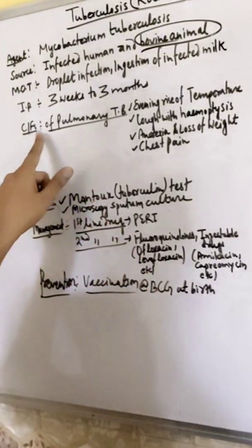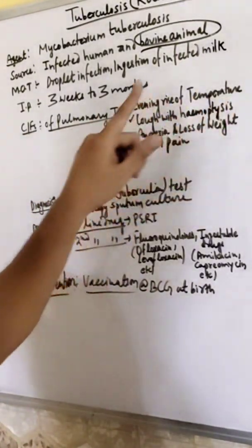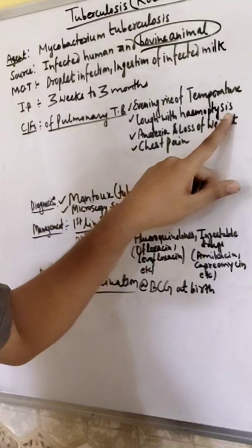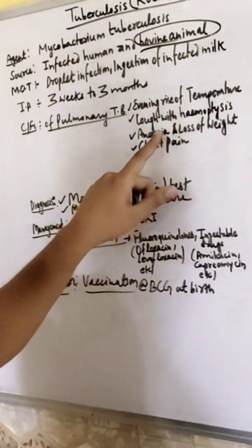Clinical features of pulmonary TB: evening rise of temperature, cough with hemoptysis. Hemoptysis is coughing with blood. And anorexia.